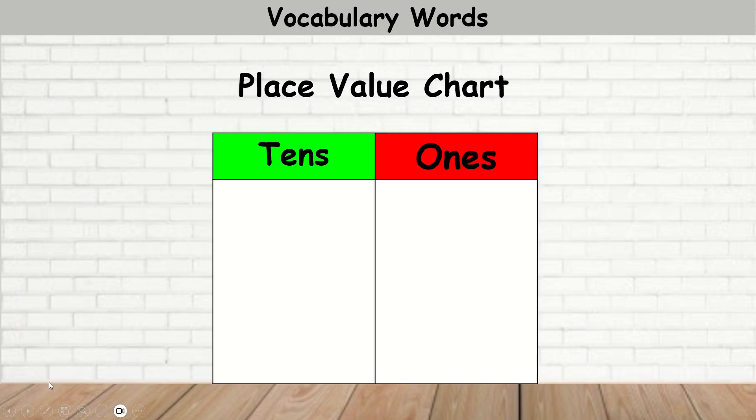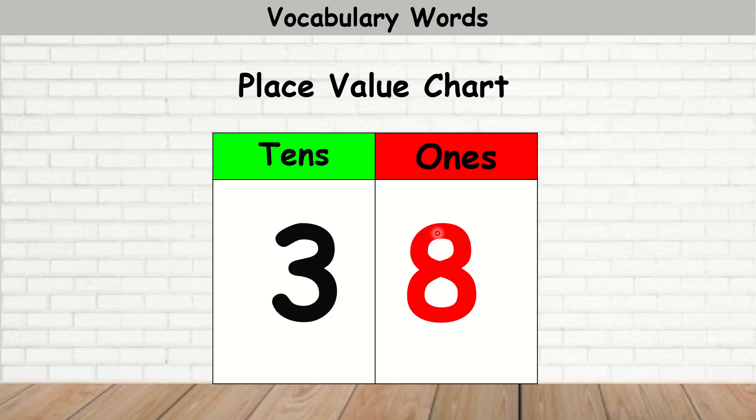Before we go further, let's look at the vocabulary word. Our vocabulary word for today is place value chart. A place value chart is a table that shows you the place of the number.